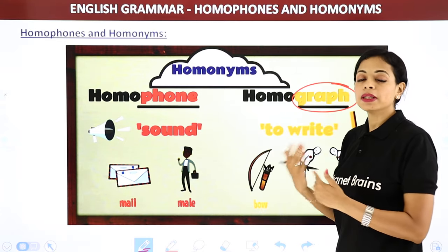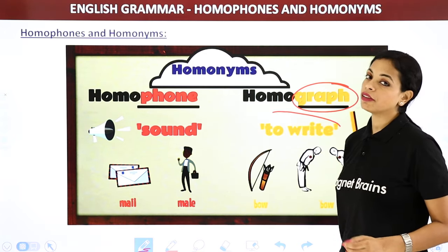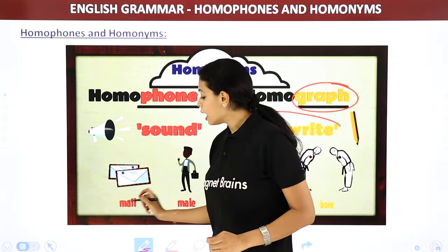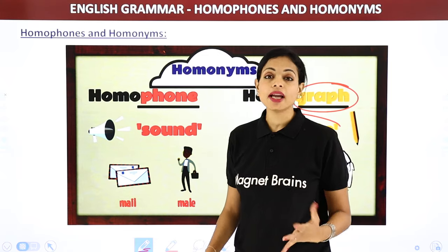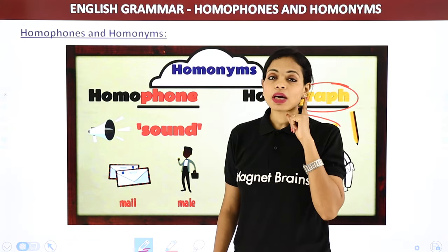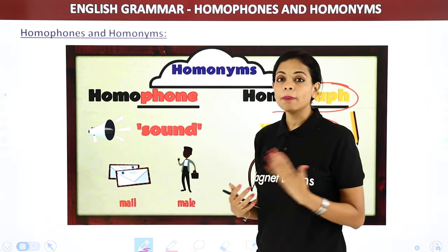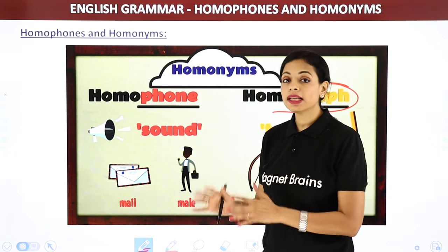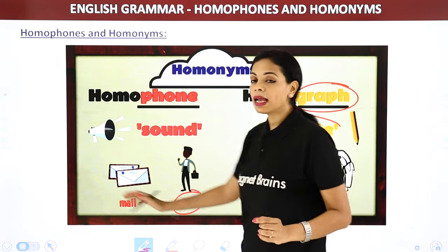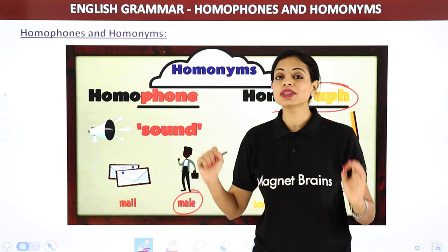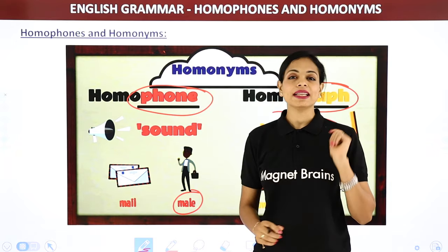For example — 'mail' (m-a-i-l) means letters or email, and 'male' (m-a-l-e) means a man. Both sound the same — this is a homophone example where the sound is the same but spellings are different. When we talk about homographs, like 'bow' (bow and arrow) and 'bow' (to bow down) — both spellings are the same but meanings differ.